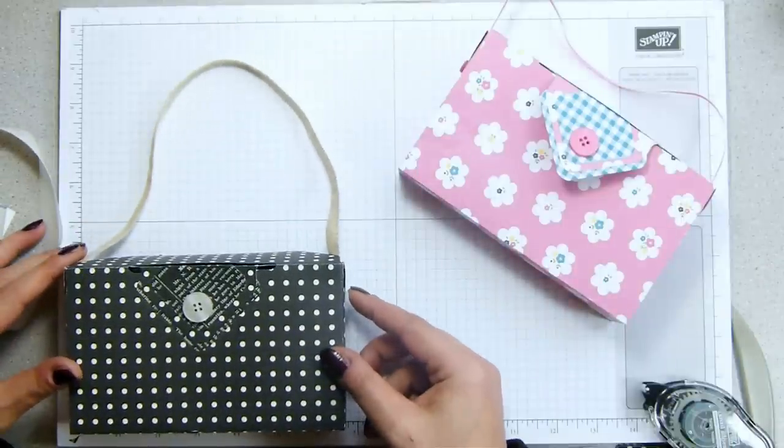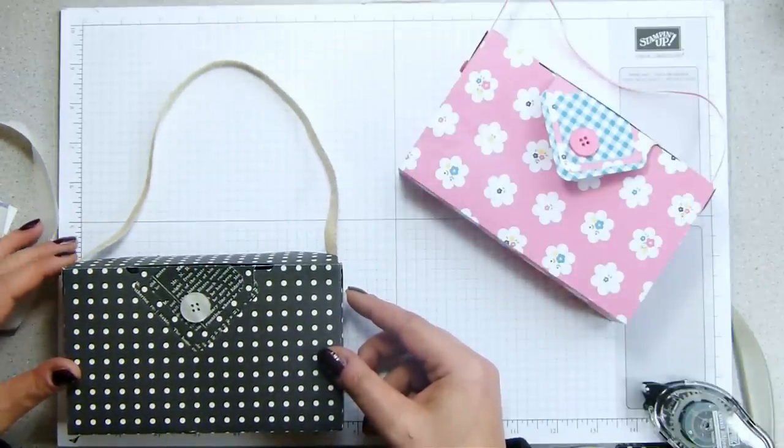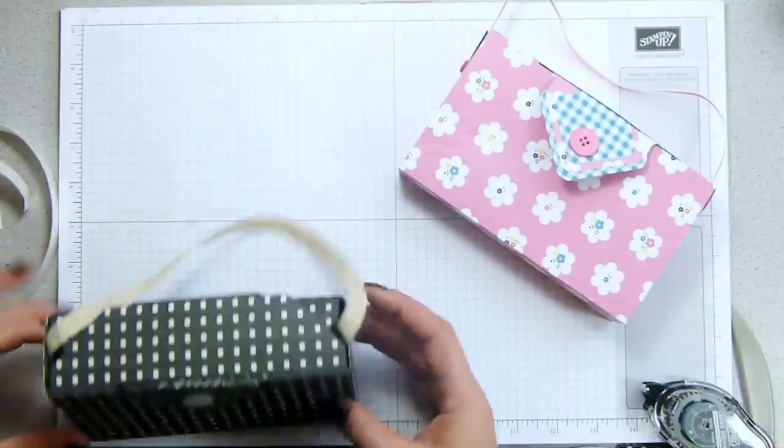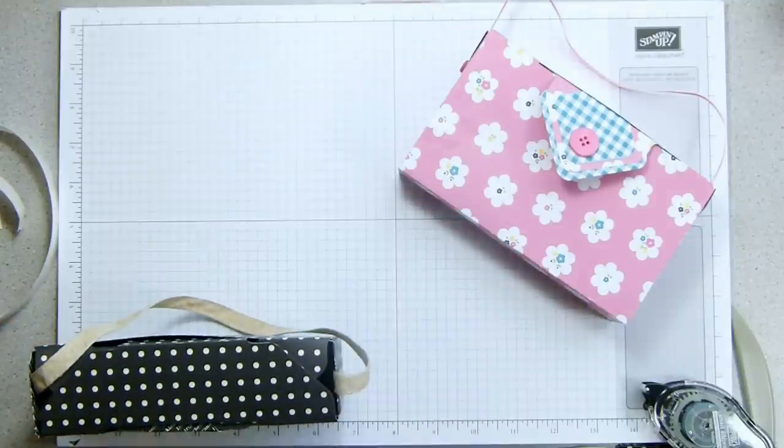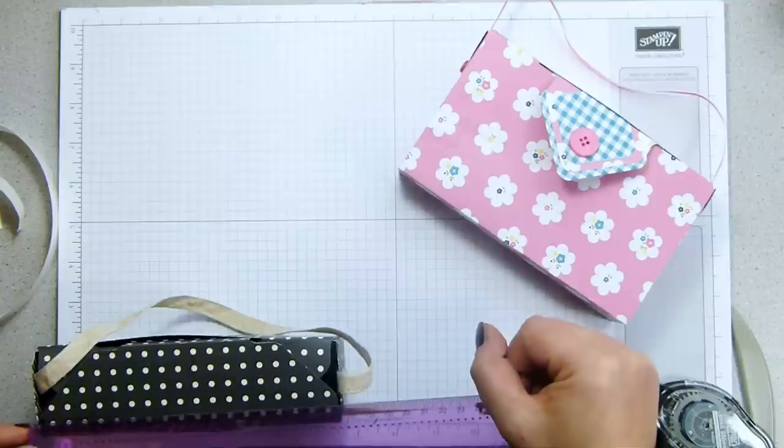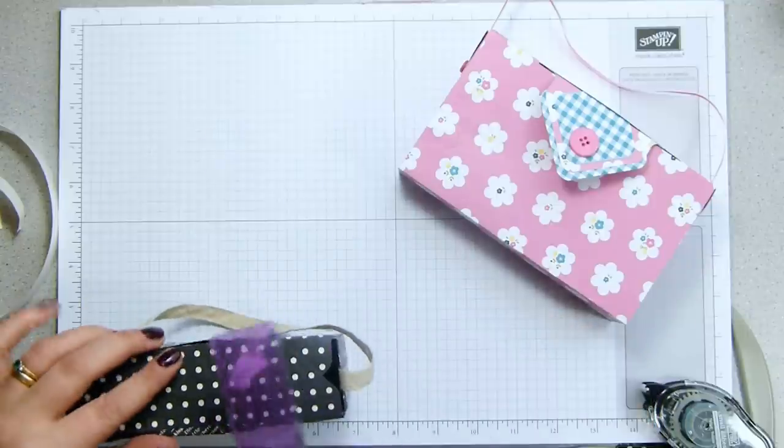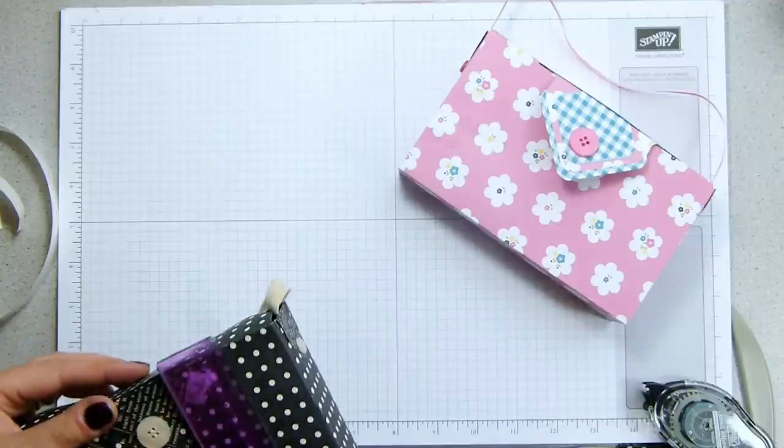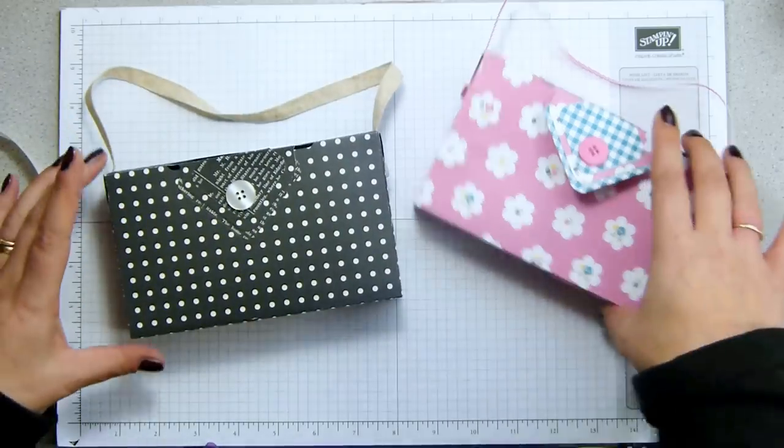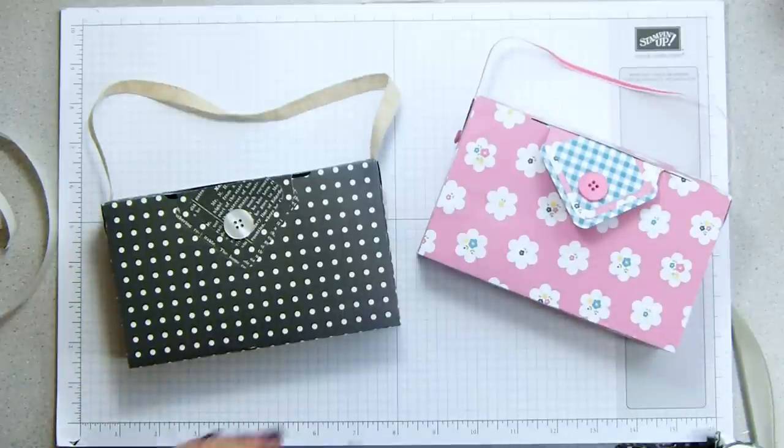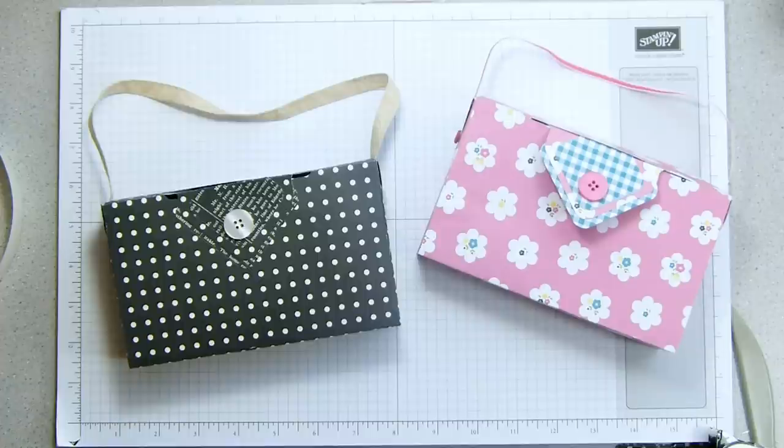The finished dimensions of this are six and five eighths by four by one and three quarters, which measures 17 by 5 by 10 centimeters. So that's pretty big actually, really quite big, bigger than I thought. Thank you very much for joining me. I know it's a longer project than I would normally do. I hope you find it worth it. Thank you very much for joining me in Envelope Punchboard Week. Bye!